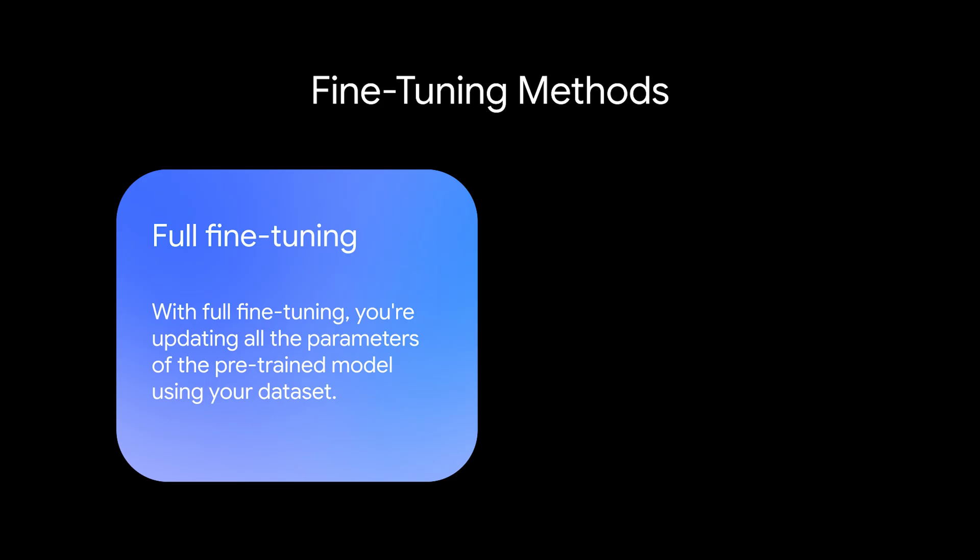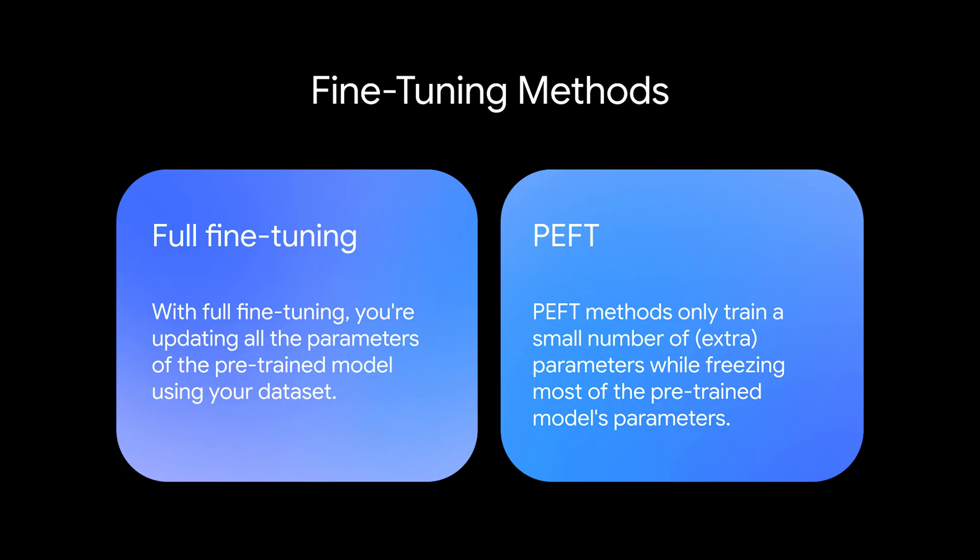Gemma models are open models, which means we can modify the weights through fine-tuning. There are many different techniques. One example is full fine-tuning, where we update all of the model weights — the advantage is we can get good performance, but the downside is it is computationally intensive. Another option is using parameter-efficient fine-tuning techniques, PEFT, like LoRA or its quantized version QLoRA. PEFT methods like LoRA are effective because they only train a small additional number of parameters while keeping the original model weights frozen, which reduces training time and compute requirements.